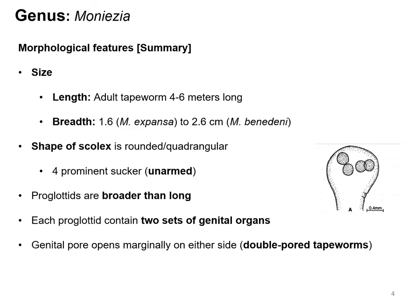As a summary: this parasite is very large, four to six meters long. The breadth is around 1.6 cm for Moniezia expansa and around 2.6 cm for Moniezia benedini. The scolex is almost rounded or quadrangular with four prominent suckers. The mature proglottid is almost rectangular and broader than long, with two sets of genital organs and two genital openings opening marginally.